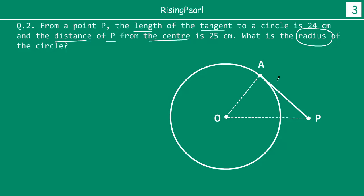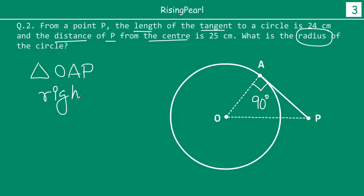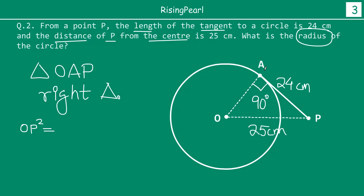When we join OA, we know from the first theorem that angle OAP must be 90 degrees. So triangle OAP is a right triangle because this angle is 90 degrees from the first theorem. Applying Pythagoras theorem, OP is the hypotenuse — the side opposite the 90 degree angle. We have been given that PA equals 24 centimeters and OP equals 25 centimeters. Applying Pythagoras: OP² equals OA² plus AP², so R² equals OP² minus AP².